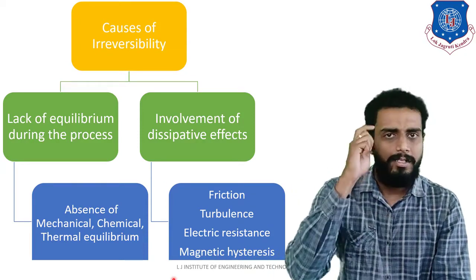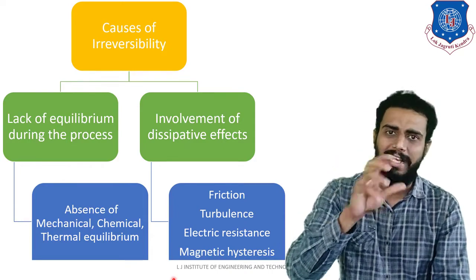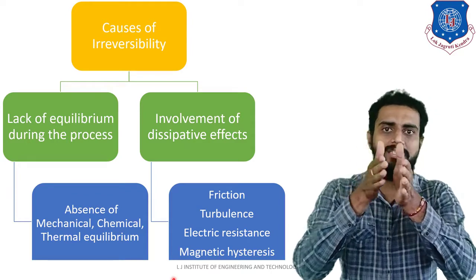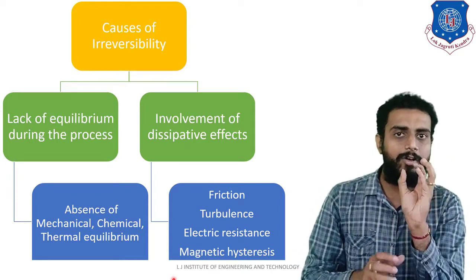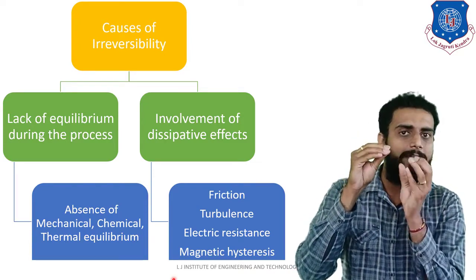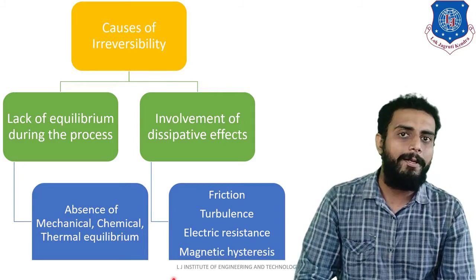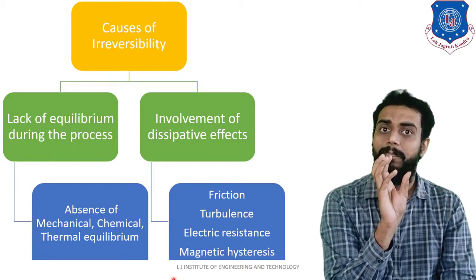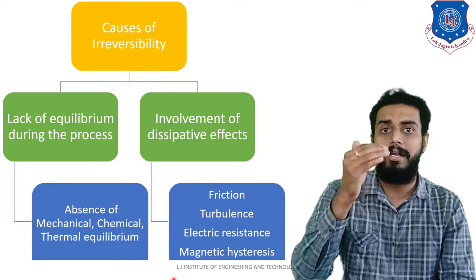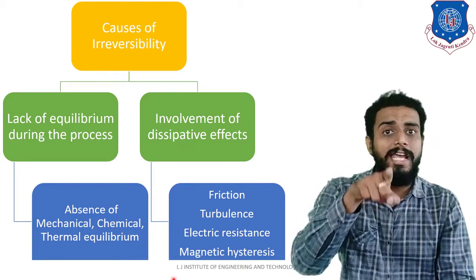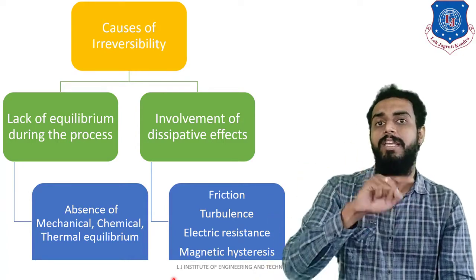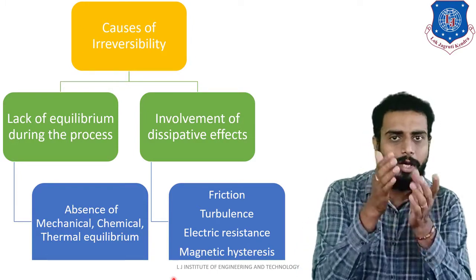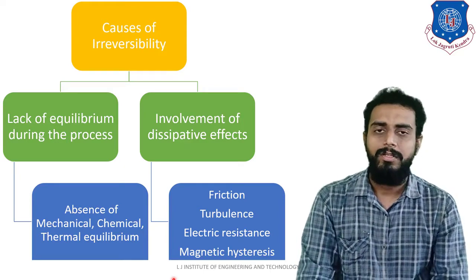The logic of dissipative effect via friction is simple. When the stirrer rotates, its blades are in constant contact with water molecules, causing friction. Due to friction, the water temperature rises, its internal energy increases, and the water's thermodynamic equilibrium is disturbed — causing irreversibility. The same reasoning applies to other dissipative effects. That is all for today. Thank you.